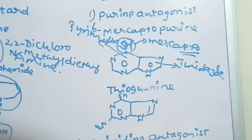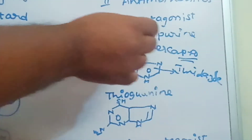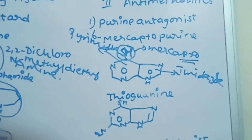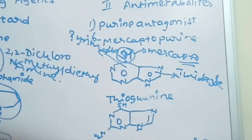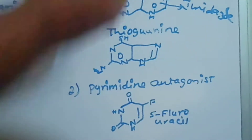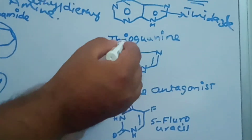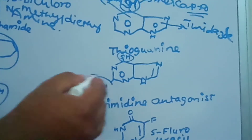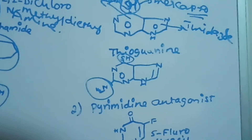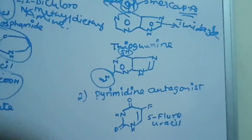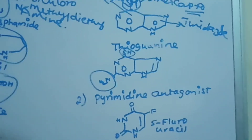The second purine antagonist example is thioguanine. It also contains a purine ring and an SH group, but differs from 6-mercaptopurine by having an extra amino (NH₂) group at a specific position on the ring.